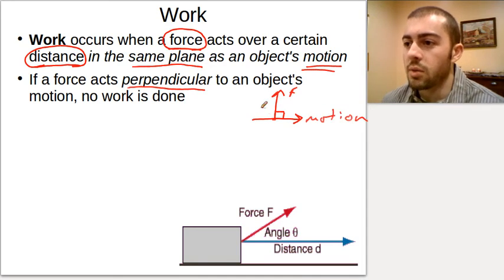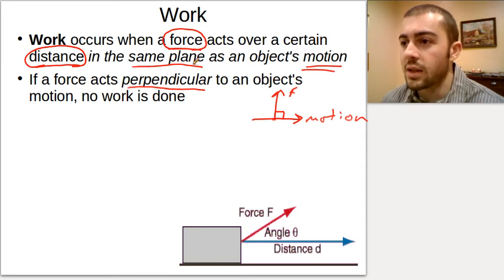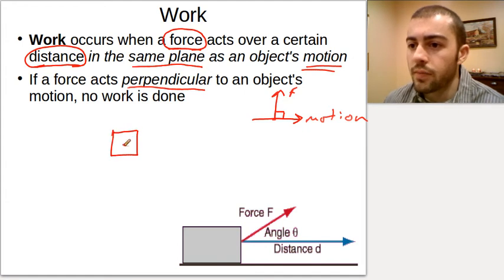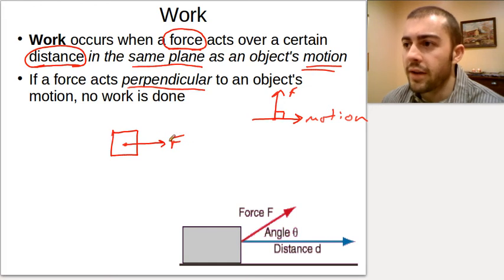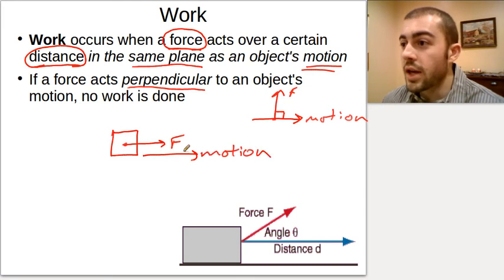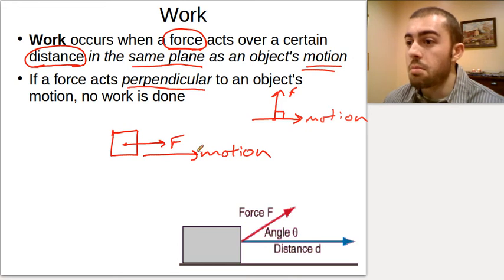In order for work to be done, we need a force to act over a certain distance and it has to have some part of it in the same plane as the motion. So if we take a box and apply a force to the right — an applied force — and push the object so it moves to the right, work would be done because the force and the motion are in the same plane.